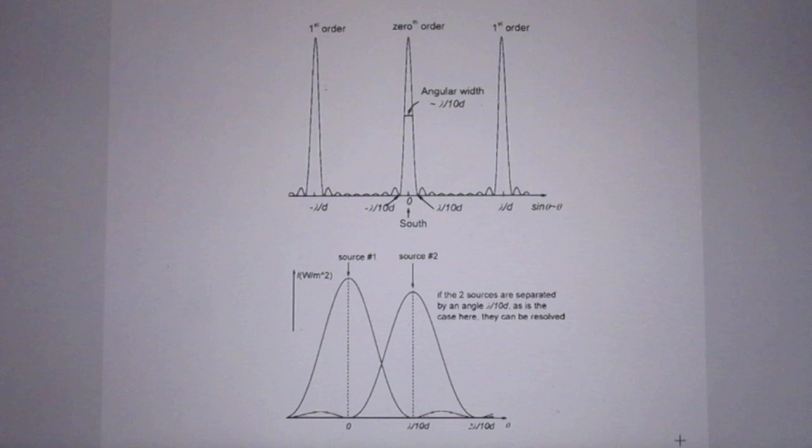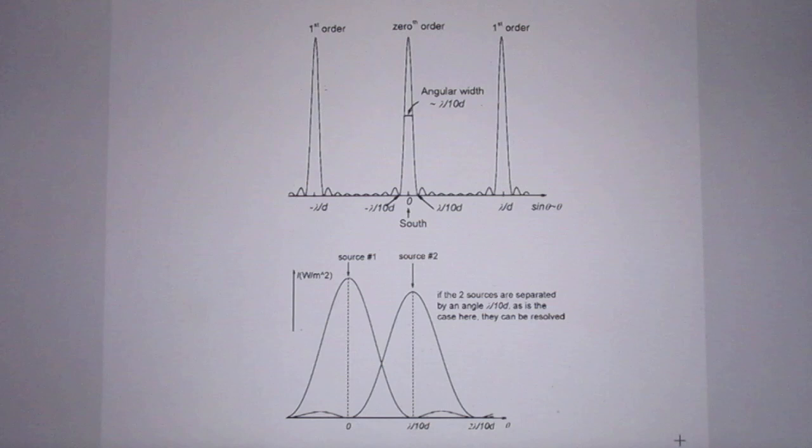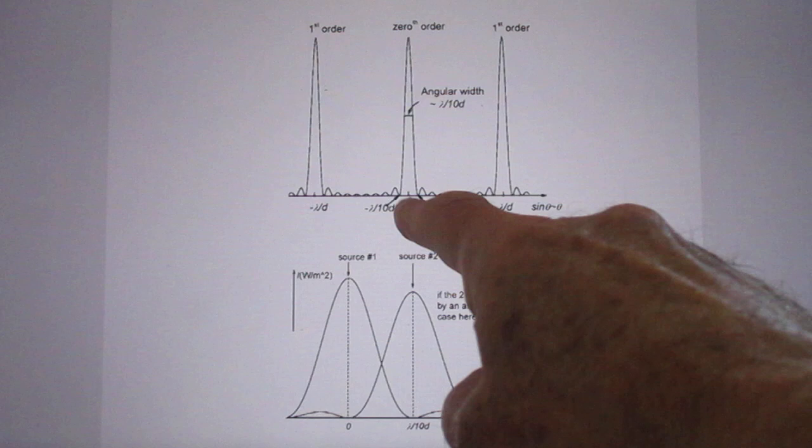You see here at the top the interference pattern as a function of angle. This is the zero order and this first order and first order. That separation is always lambda divided by D if D is the distance between the telescopes. This is also lambda over D.